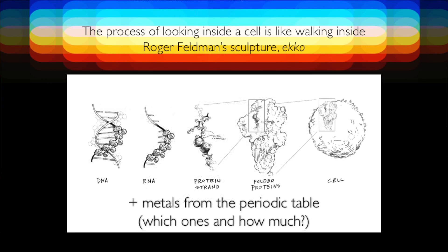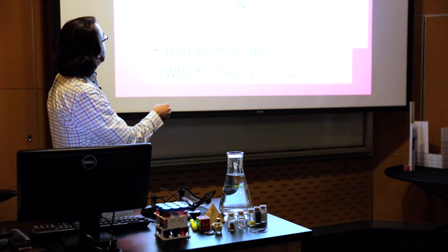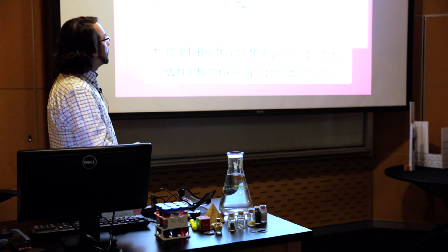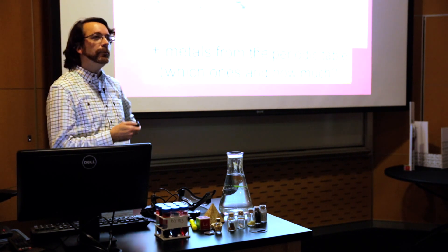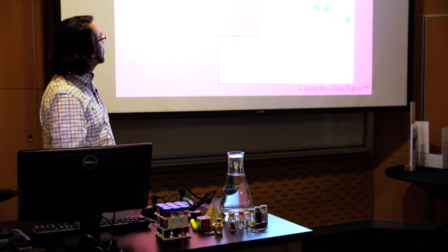So what do we see if we look inside cells? We see a lot of different things, but there's some chemistry that we always see. The chemistry we always see is the progression from DNA to RNA all the way up to the cell. And you also see metals from the periodic table — you always see phosphate used for DNA, and you always see certain metals at certain concentrations. The reason why is actually in the periodic table if you look deeply enough.